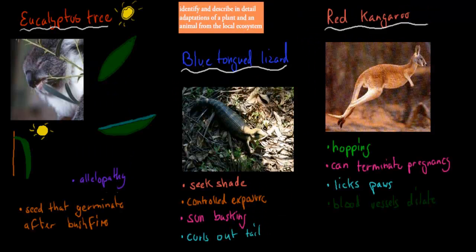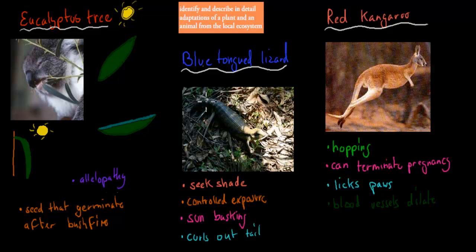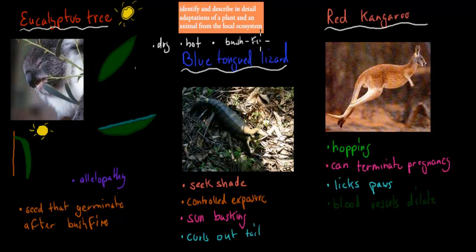The ones relevant for Sydney are, for example, the eucalyptus tree. If you look at the environment where the eucalyptus tree, the blue-tongued lizard and the kangaroo live, it's quite dry, usually quite hot and dry. And there are also lots of bushfires, which can be a problem as well. These are typical environmental factors that come up for Sydney.